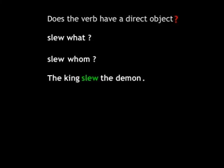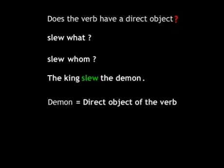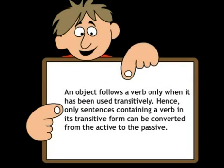And we get the answer: the king slew the demon. Hence, we can say that the verb in this case has a direct object. The second point to remember is: an object follows a verb only when it has been used transitively. Hence, only sentences containing a verb in its transitive form can be converted from the active to the passive voice.